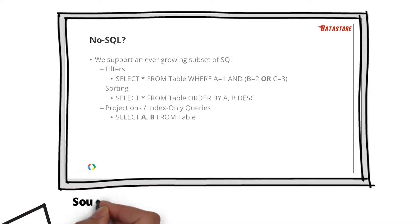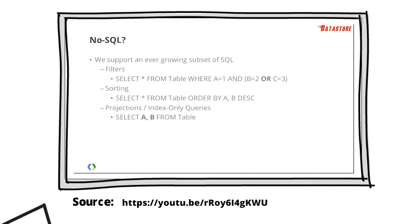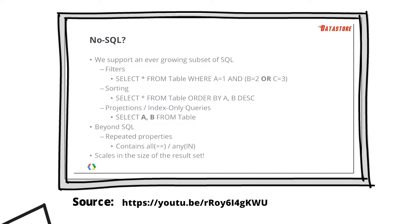Datastore supports a wide range of filters — including OR in both Java and Python — so you can combine filters with OR, AND, and sub-expressions. It supports arbitrary sorting and projections, or index-only queries, where you can retrieve just a few properties from your entities, which is much faster and cheaper than retrieving the whole entity. It also goes beyond SQL by supporting repeated properties, enabling set operators like contains-all or contains-any — incredibly useful for things like labels in Gmail or tags for photos. Query performance scales with the result set size, so performance won't degrade as your database grows.